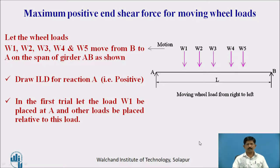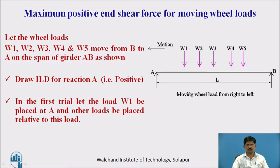Now, for maximum positive end shear force for a moving wheel load — suppose the wheel loads W1, W2, W3, W4, and W5 are moving on a bridge or girder from B to A. To find out the maximum positive shear force, we first draw the ILD for reaction A. In the first trial, W1 is placed at A and the other loads are placed relative to W1.